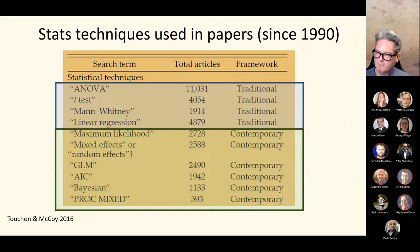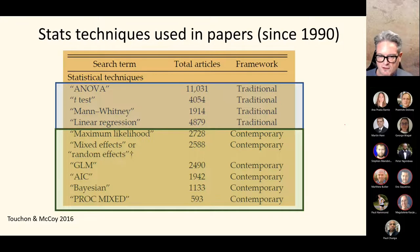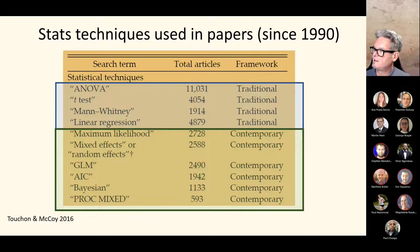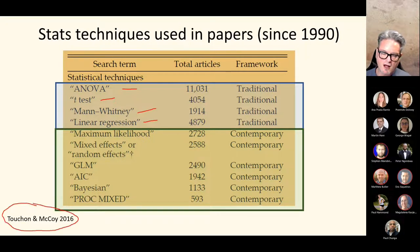If any of you were there for my talk Monday, you would recognize this slide. This is a way to organize our thinking about how statistics practice is changing. We have these traditional methods — tests like ANOVA, the analysis of variance, simple linear regression, and non-parametric tests like the T-test. This is a survey of papers in ecology, but it would hold true in any quantitative field. The new statistics include things like the generalized linear model and mixed effects models.